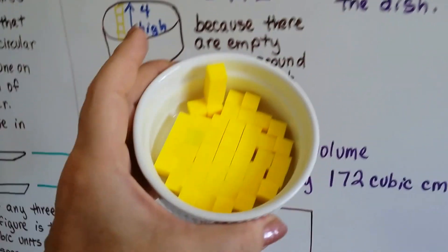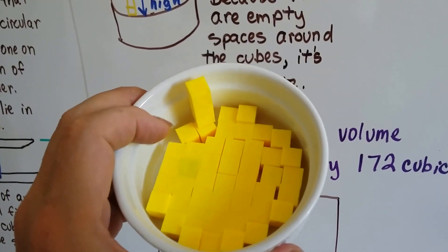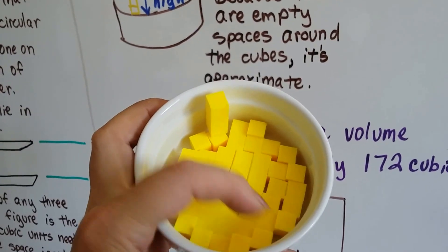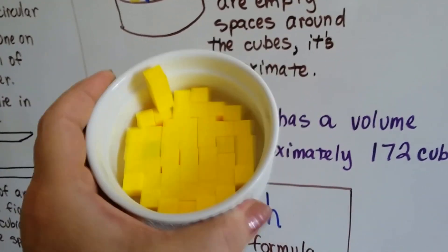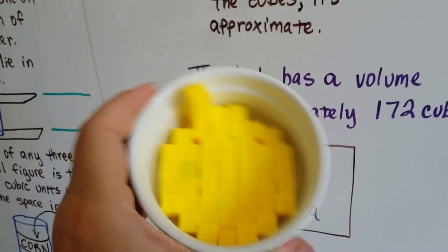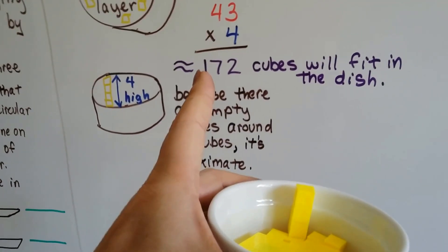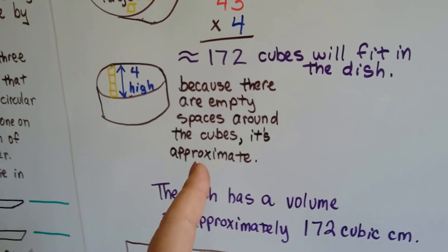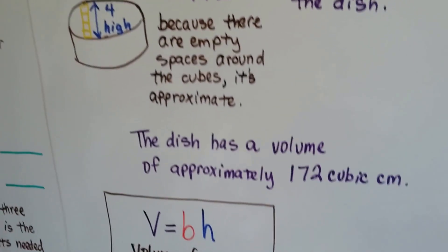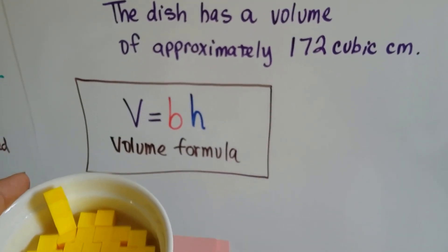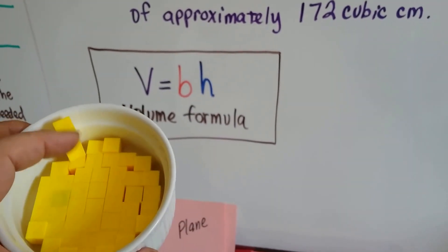Now, this is approximate because can you see the empty spaces along here, like a triangle there and a triangle there? There's a little triangle open space here. Because this is a round dish, and I couldn't fit another cube in there, even though it jiggles a little bit. So this is an approximate volume. There's empty spaces around the cube, so it's approximate. So this dish has a volume of approximately 172 cubic centimeters, because each one of these is a cubic centimeter.